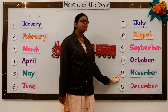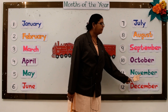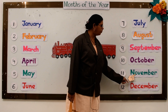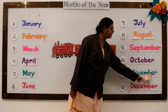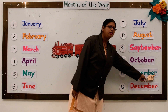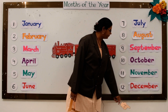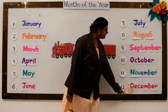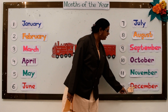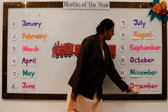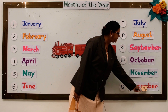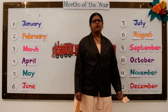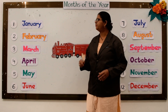The eleventh month of the year is November. N-O-V-E-M-B-E-R, November. The twelfth month of the year is December. D-E-C-E-M-B-E-R, December. Let us once revise it again.